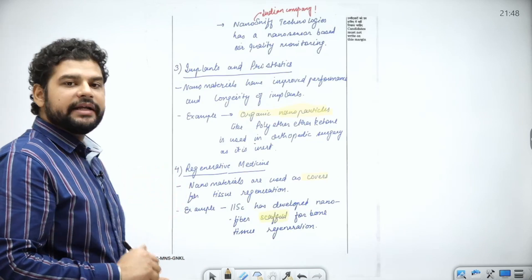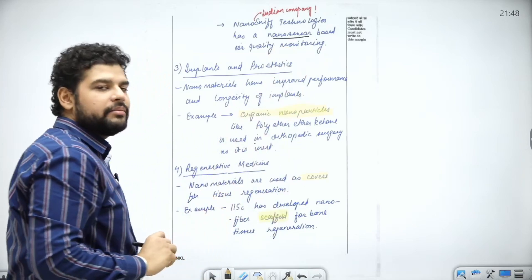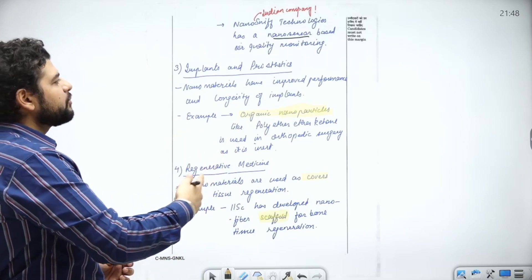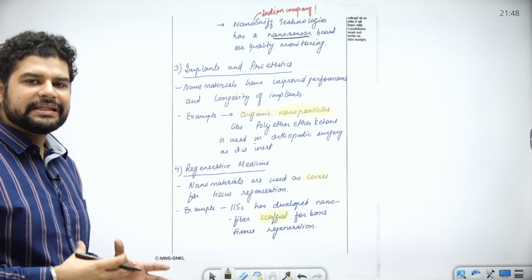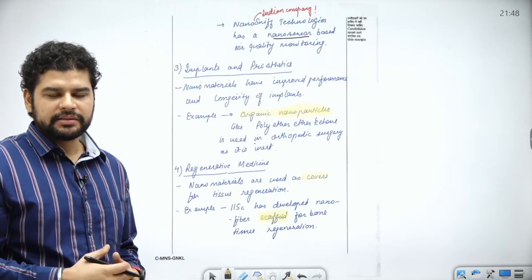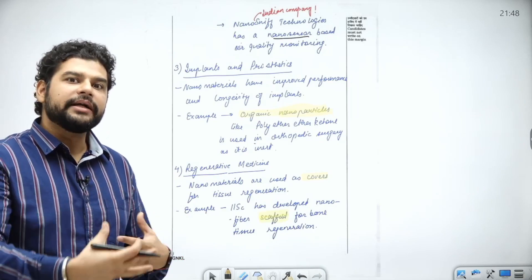NanoSniff is an Indian company which has developed a nanosensor-based air quality monitoring system. This is an Indian example. Next point is implants and prosthetics. Nanotech can create new materials for implants and prosthetics, and it can augment the current materials.